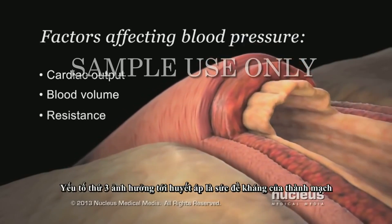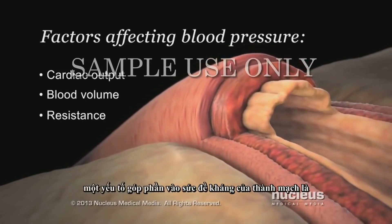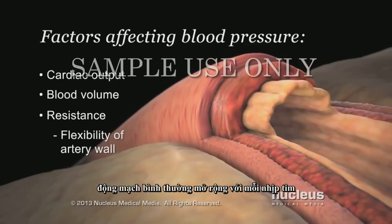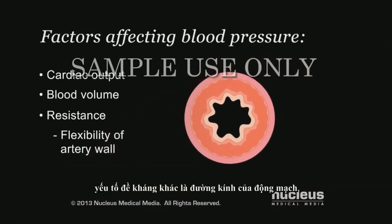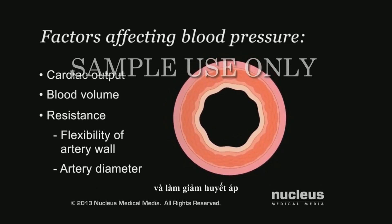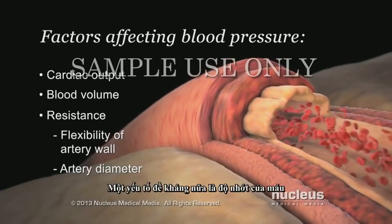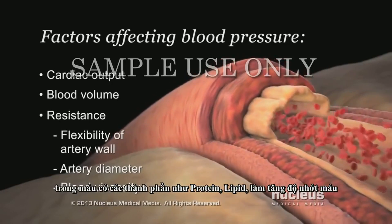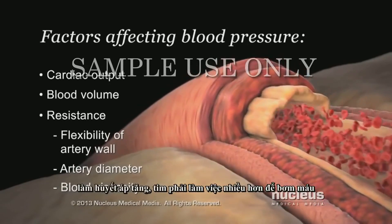The third factor that affects your blood pressure is resistance, which is anything working against blood flow through your arteries. One resistance factor is the flexibility of your artery wall — healthy arteries expand with each heartbeat to help reduce blood pressure. Another is the diameter of your arteries; your body can increase diameter to lower blood pressure or reduce it to raise pressure. A third resistance factor is blood viscosity, or thickness — more particles such as proteins and fat increase viscosity, making your heart work harder to push blood through your arteries.